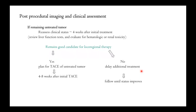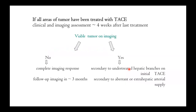Post-procedure imaging and clinical assessment: if remaining untreated tumor is present, clinical assessment is performed 4 weeks after initial treatment. If the candidate is suitable for loco-regional therapy, a repeat TACE is planned 4 to 8 weeks after the initial TACE; if not, we wait until status improves. If all areas of tumor have been treated, imaging assessment occurs 4 weeks after the last treatment. Viable tumor on imaging may be secondary to untreated hepatic branches or aberrant extra-hepatic arterial supply. If there is no viable tumor, complete imaging response is followed up in 3 months with imaging.